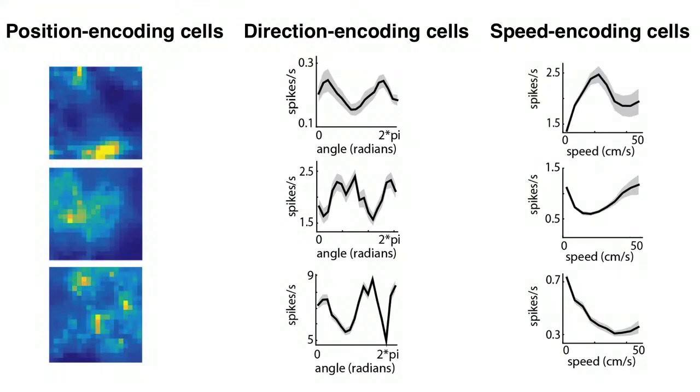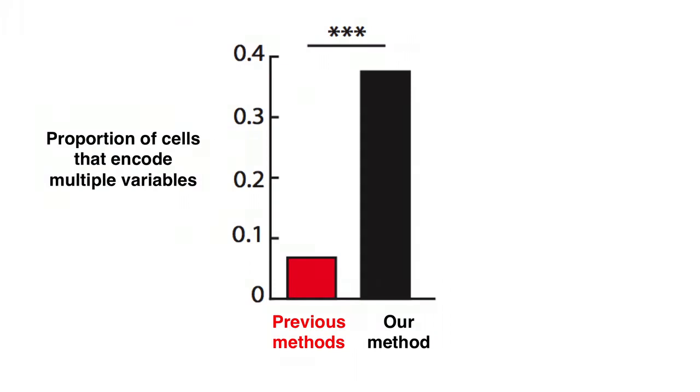In addition, while many previous labs have reported that cells in superficial entorhinal cortex only encode a single variable, we observed that many cells, in fact, encoded multiple variables simultaneously.